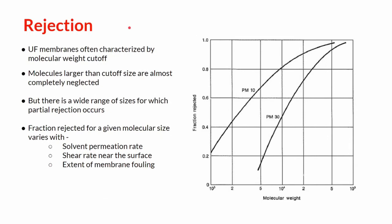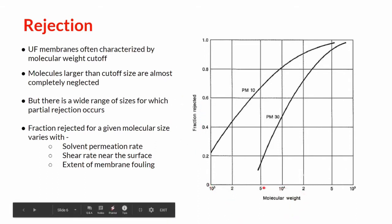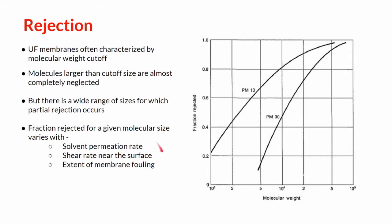Rejection is an important phenomena for ultrafiltration membranes as the ultrafiltration membrane tends to reject particles based on the molecular weight. Molecules larger than the cutoff size are almost completely rejected. The graph on the right shows the fraction rejected with the molecular weight for 10 and 30 pm. This has been taken from a research paper. Word of caution: these data might vary from case to case as the fraction rejected for a given molecular size varies with solvent permeation rate, shear rate near the surface, and the extent of membrane fouling.